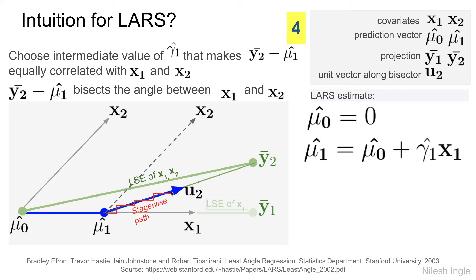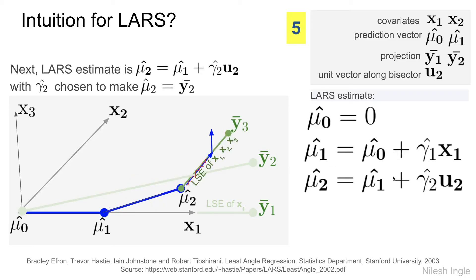While doing so, we increment again, so we incremented to mu hat 1 plus gamma hat 2 and u2. Once we reach there, we find there is another third variable, third feature x3, that now has equal correlation with the residual. Therefore, that's the new direction.